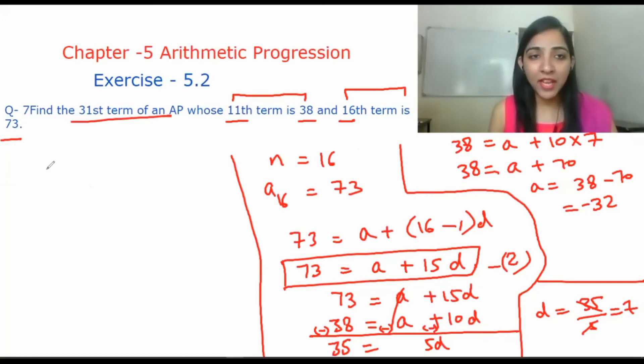Now, we have to find the 31st term of the AP. So we know that a is equal to minus 32 and d is equal to plus 7. And we will use the formula for the 31st term.